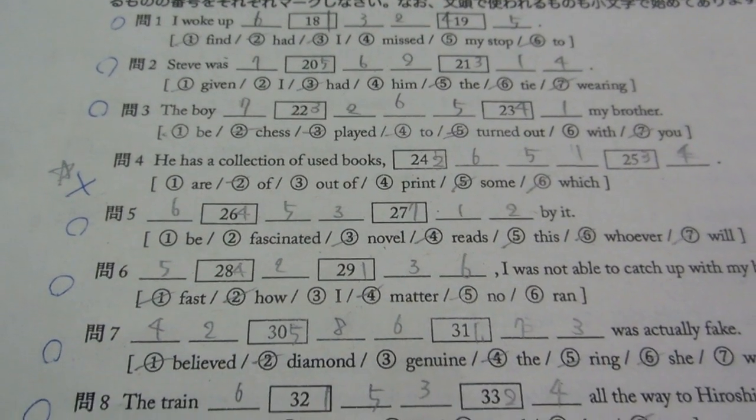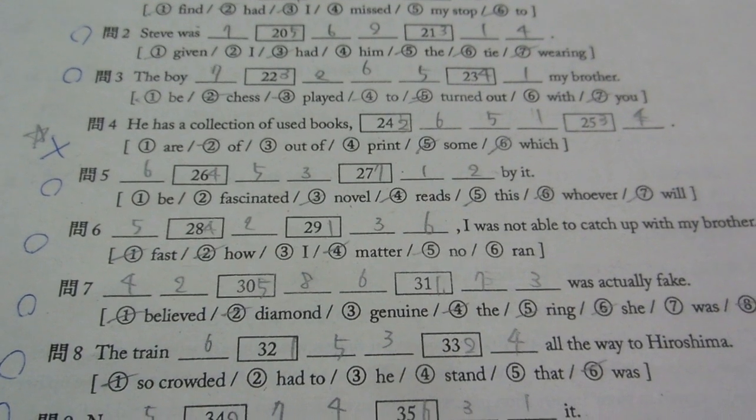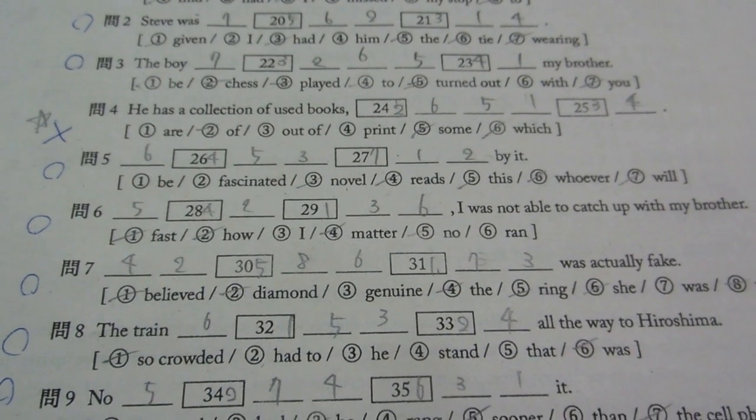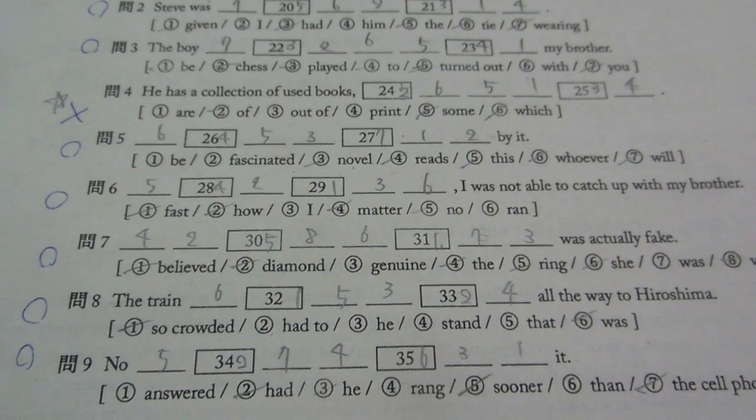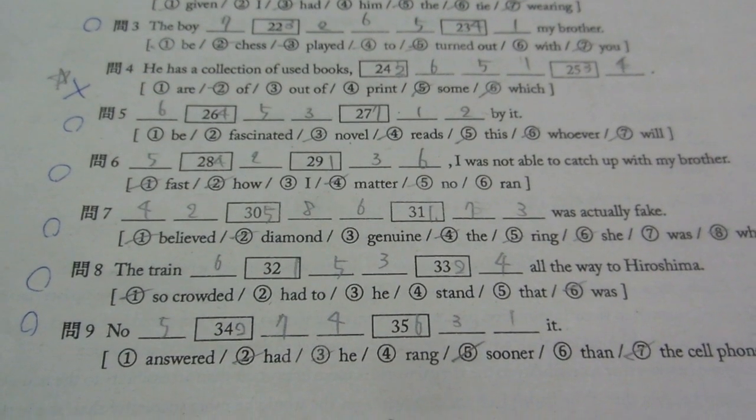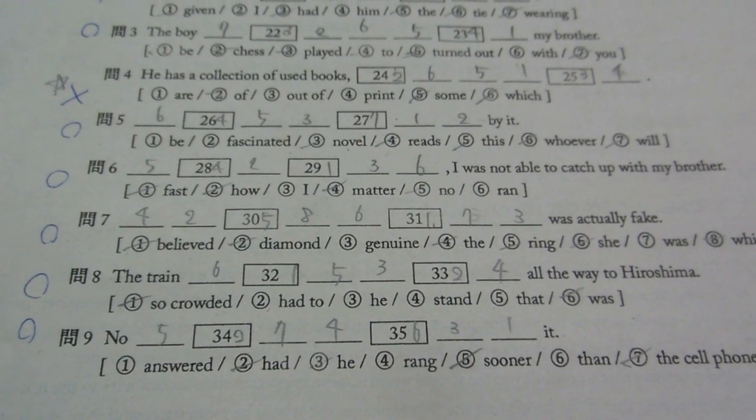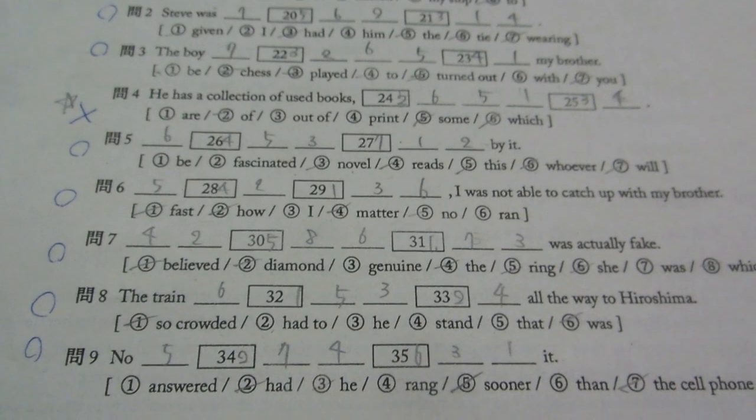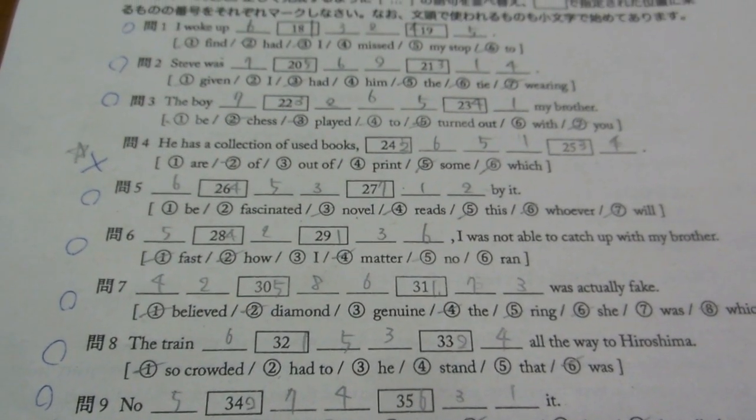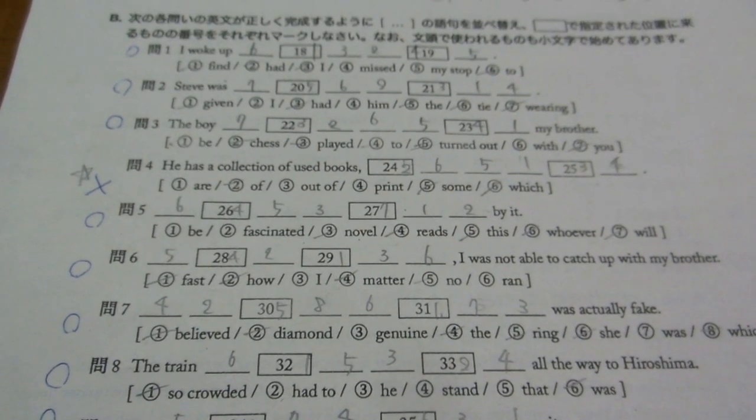Much easier just to write the sentence, wouldn't it? Here's the words, put these words together in the right order and just write the words on the line would be easier. If the sentence is correct, mark it correct, not that difficult. But they love to make things complicated for no reason.